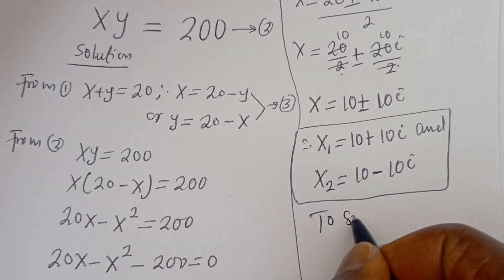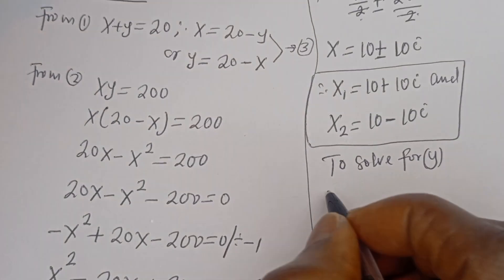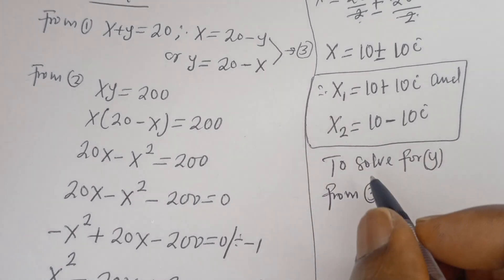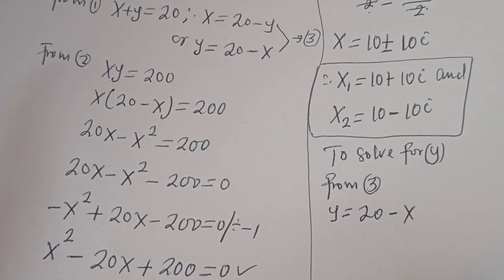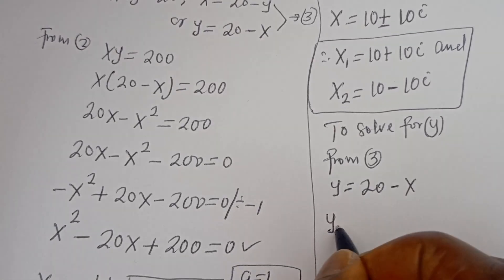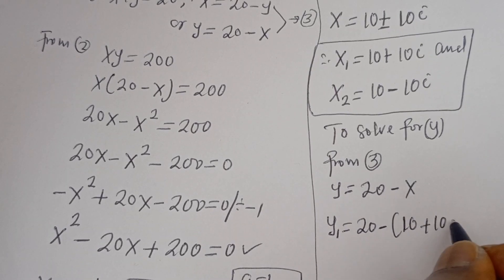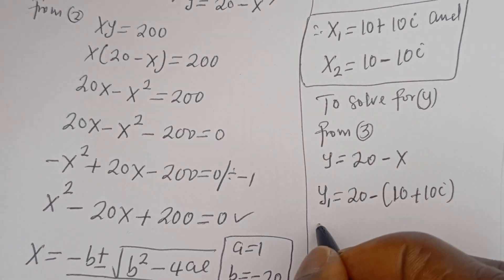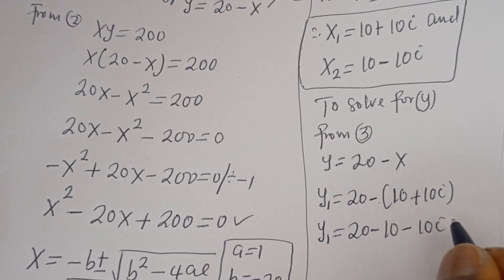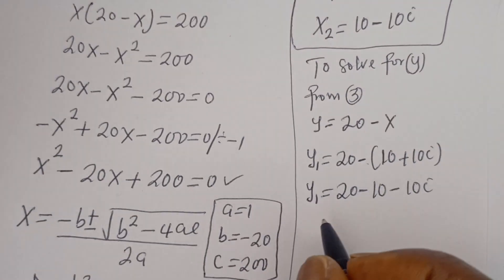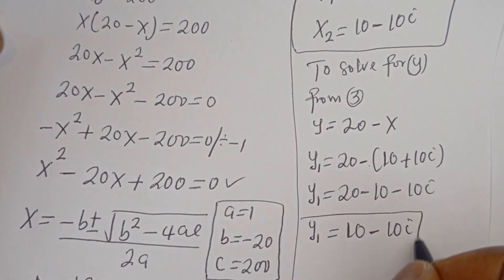To solve for Y, from equation 3 we know that Y is equal to 20 minus X. So Y1 is equal to 20 minus X1, which is 20 minus (10 plus 10i). Then Y1 is equal to 20 minus 10 minus 10i, so Y1 is equal to 10 minus 10i. This is the value of Y1.